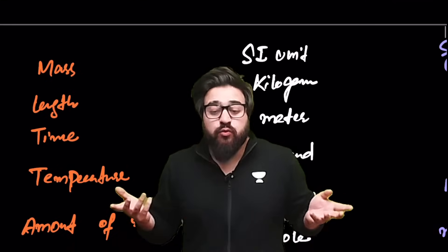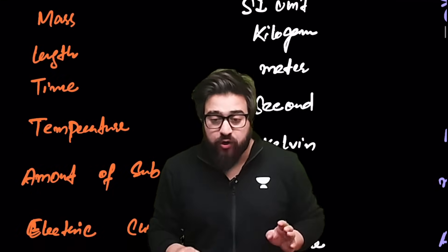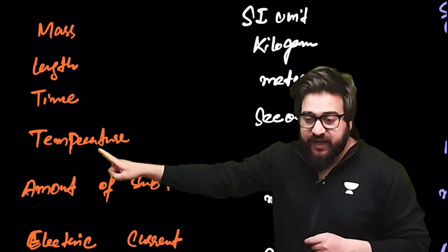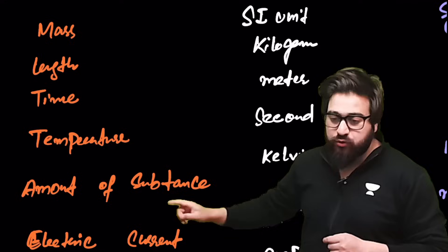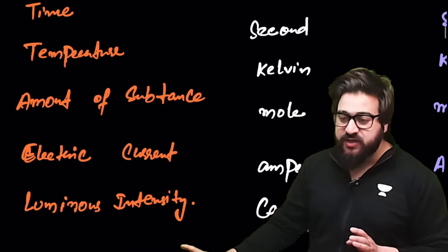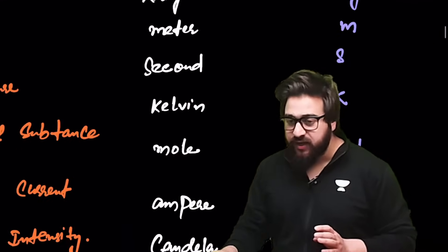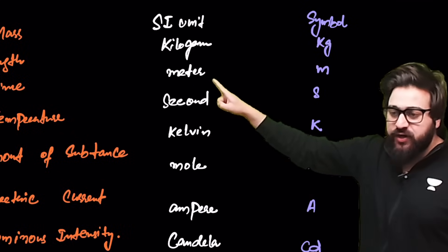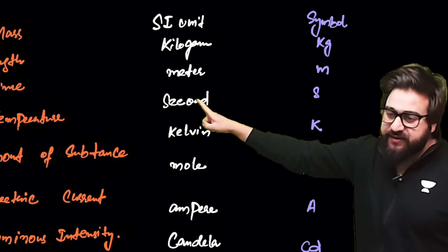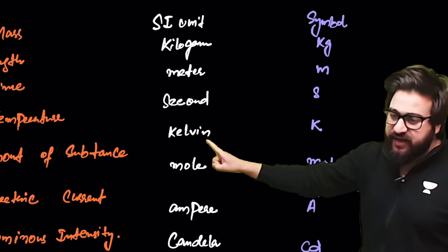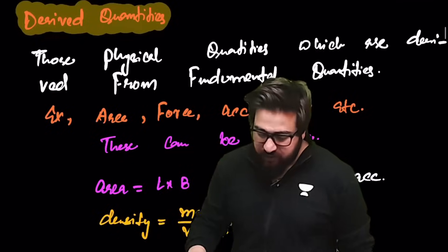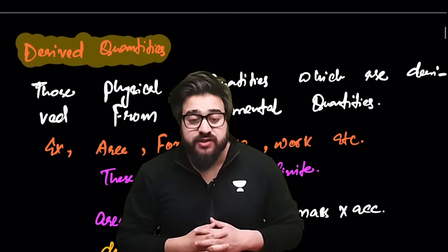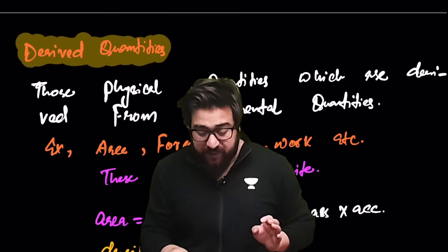The fundamental quantities are: mass, length, time, temperature, amount of substance, electric current, and luminous intensity. Their SI units are kilogram, meter, second, kelvin, mole, ampere, and candela respectively.